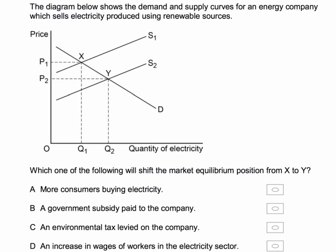Let's go through the answers. Answer A — all consumers buying electricity — that will just shift the demand curve to the right, causing an outward shift of demand, not of supply. Looking at C next: an environmental tax levied on the company. A tax causes an inward shift of supply, which would be a rise in costs — so that's the opposite of the right answer.